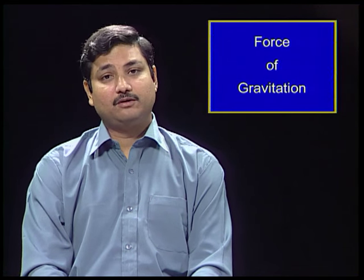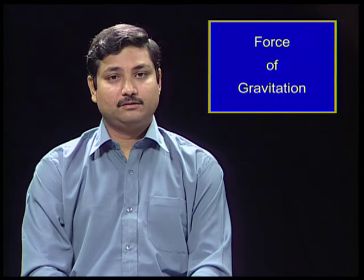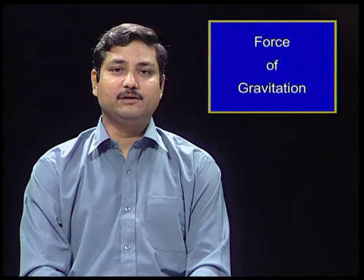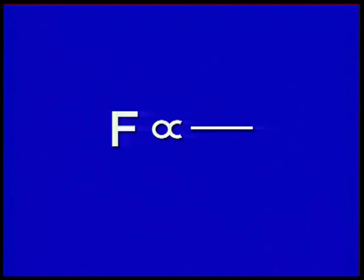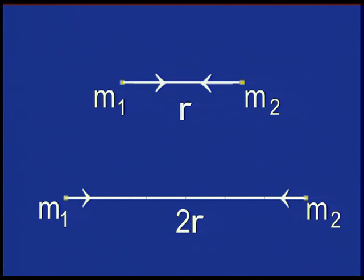Let us learn more about the force of gravitation. It follows from the 1 by r square dependence of the force of gravitation between two objects. Suppose that the distance between the two objects is doubled, that is increased from r to 2r. What happens to the magnitude of the force? The force reduces to one fourth.